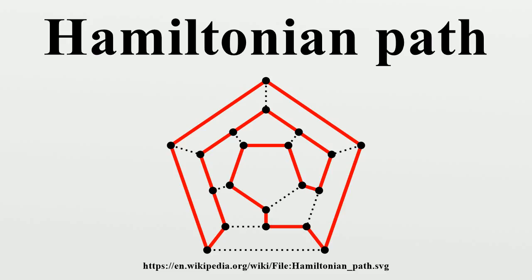The following theorems can be regarded as directed versions. A strongly connected simple directed graph with n vertices is Hamiltonian if every vertex has full degree greater than or equal to n. A strongly connected simple directed graph with n vertices is Hamiltonian if the sum of full degrees of every pair of distinct non-adjacent vertices is greater than or equal to 2n minus 1. The number of vertices must be doubled because each undirected edge corresponds to two directed arcs, and thus the degree of a vertex in the directed graph is twice the degree in the undirected graph.